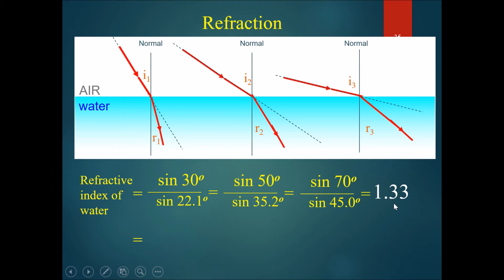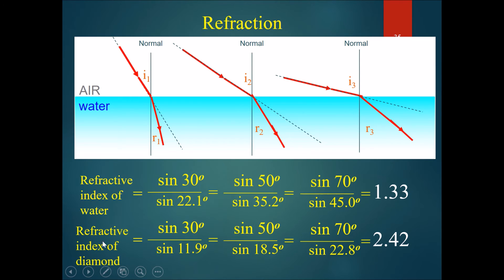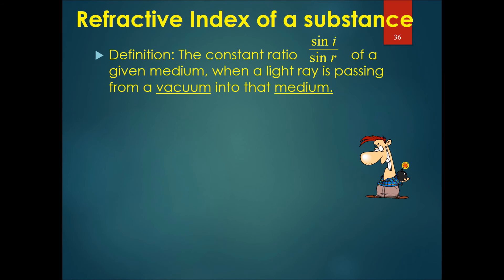The same thing occurs for diamond, but you can see that because of the high refractive index, the same angle of light shone from air to diamond will actually produce a much smaller refraction angle. Therefore, a higher refractive index will produce a much smaller angle into the diamond.